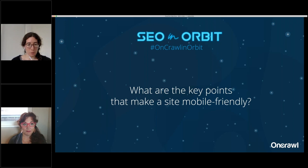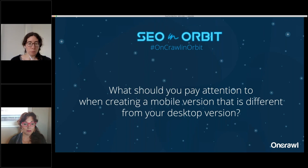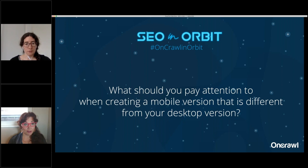When you have separate mobile and desktop versions, you need to make sure schema, hreflang, internal links, and content all match. You can have different image sizes for different versions, but Google likes the responsive images protocol so you're not sending a massive image to a phone.